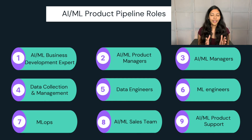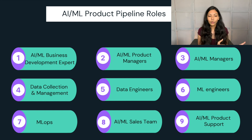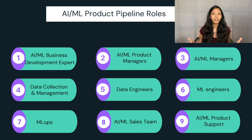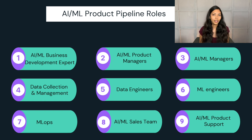This is also true for AI products or machine learning based services — we also require this entire ecosystem of different roles which are extremely important. To understand the different types of non-technical roles within AI and machine learning, we have to look at the machine learning and AI product life cycle. This actually slightly differs from a software development life cycle, hence we have very different non-technical roles available. There are actually nine different important roles involved.